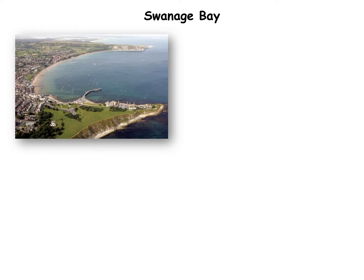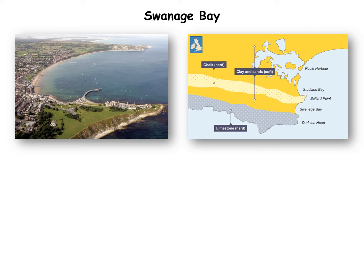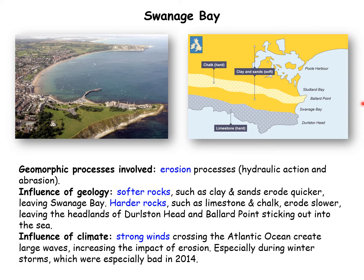Swanage Bay is sandwiched between two headlands — Ballard Point over here and Durlston Head over here. Bays are formed where there is soft rock like clays and sands that erodes away quicker between two bands of hard rock. This leaves the hard rock sticking out as headlands, and the soft rock has been eroded away as a bay.